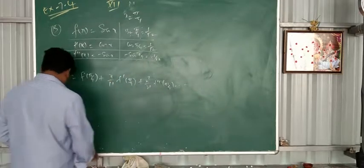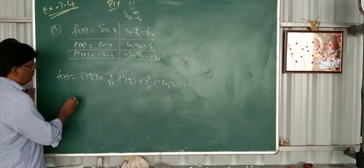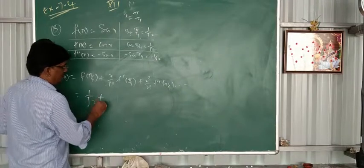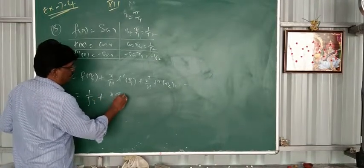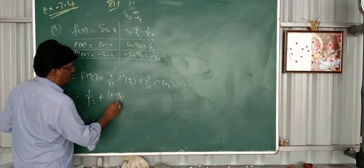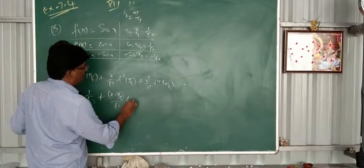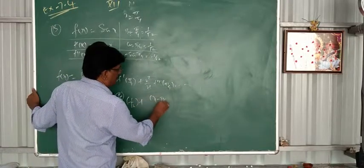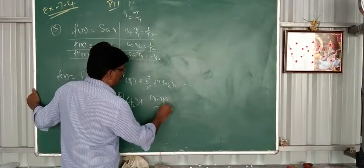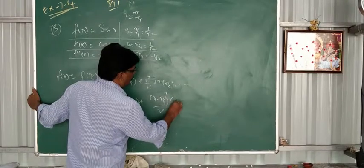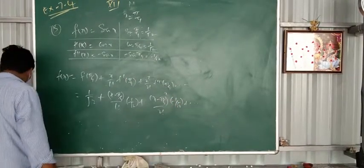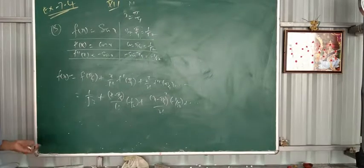Let's go on, keep on going. So this is 1 by root 2, plus x minus pi by 4 by 1 factorial, also 1 by root 2, plus x minus pi by 4 squared by 2 factorial, minus 1 by root 2.